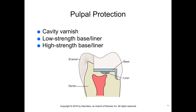Cavity varnish acts as a protective barrier between the preparation and restoration. Varnish formulations are solutions of natural or synthetic resins dissolved in a solvent such as alcohol or chloroform. They are applied in two to three layers to allow evaporation voids to be sealed. They are not used as often today because they tend to wash out at the margins.